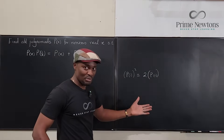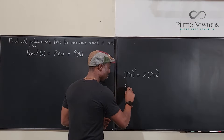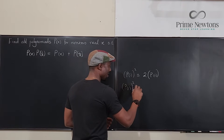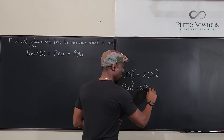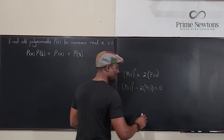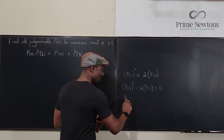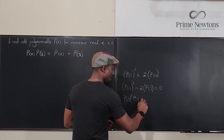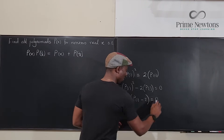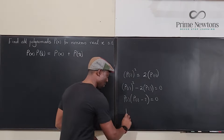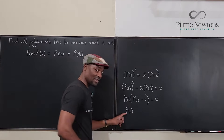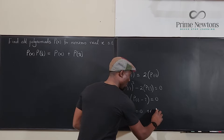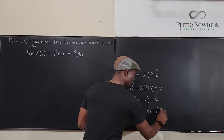To find what P(1) is, I move terms over: P(1) squared minus 2·P(1) equals 0. Factoring out P(1) gives P(1)·(P(1) minus 2) equals 0. Solving, P(1) is either 0 or P(1) equals 2.